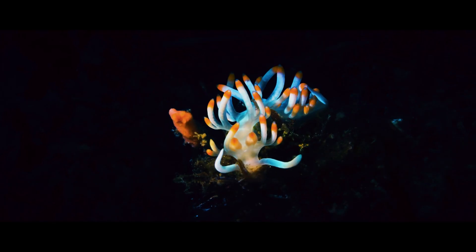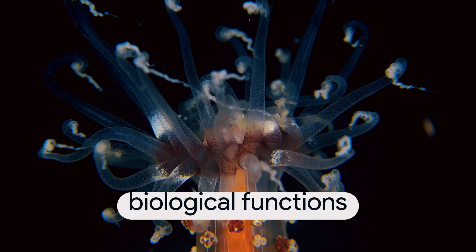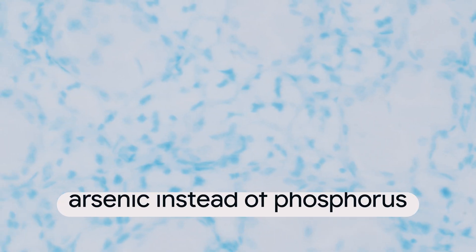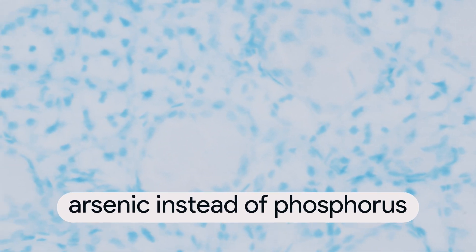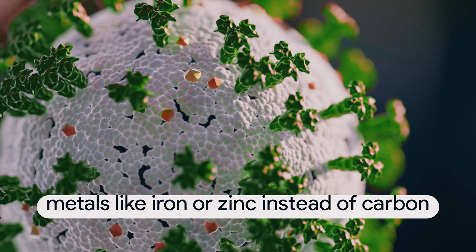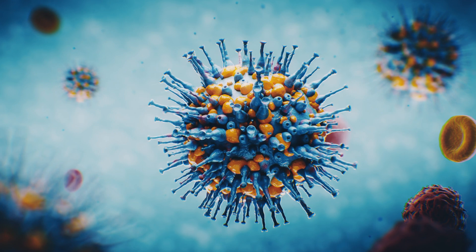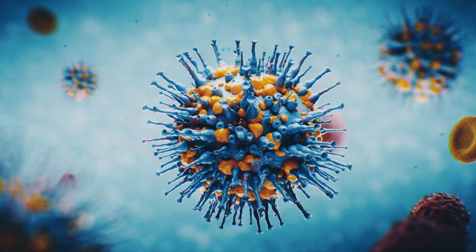Despite its importance for life, there are some organisms that are known to use alternative elements for some biological functions. For example, some bacteria use arsenic instead of phosphorus in their DNA, and some enzymes use metals like iron or zinc instead of carbon. However, these examples are rare and are exceptions to the general rule that all life on Earth is carbon-based.